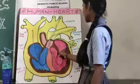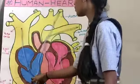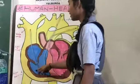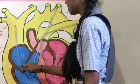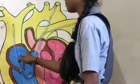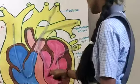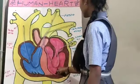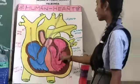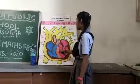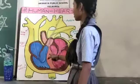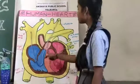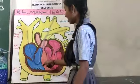2 upper chambers are atria and 2 lower chambers are ventricles. The right atrium and right ventricle together make up the right part of the heart, and the left atrium and left ventricle together make up the left part of the heart. A wall of muscle called the septum separates the 2 sides of the heart.